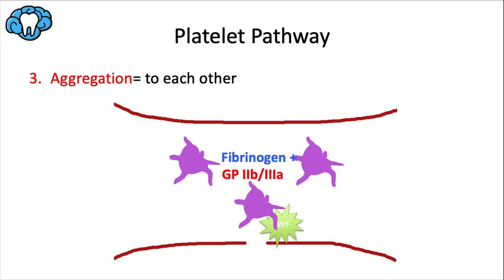Once activated, platelets begin to express glycoprotein 2b3a. Fibrinogen, floating through the bloodstream, sticks to this glycoprotein complex like Velcro, and the platelets begin sticking to each other — called aggregation. As more and more platelets aggregate, they also get activated, releasing more thromboxane A2 and ADP, continuing the positive feedback loop. The end result of primary hemostasis is a platelet plug composed of platelets and fibrinogen, tethered to the endothelium via von Willebrand factor.